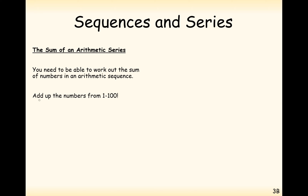Let's see how we might add up the numbers from 1 to 100. That's a starting value of 1 and a common difference of 1, going up by 1 each time. So S equals 1 plus 2 plus 3 plus 4 plus 5 plus 6, all the way up to 99 plus 100.